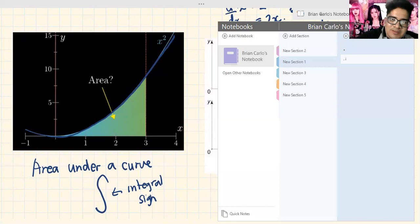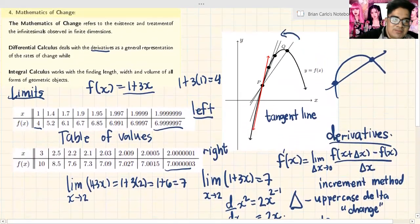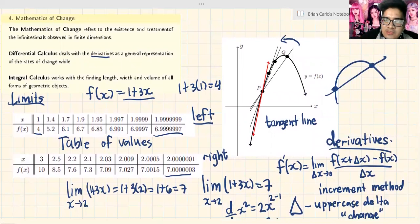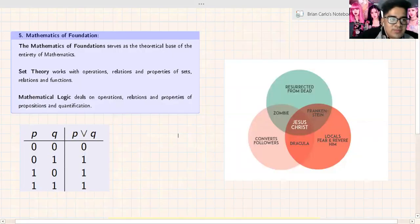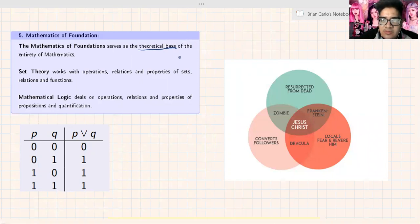I'm just giving you an overview of what these types of calculus are. We are just from differential calculus. There is another calculus type called integral calculus. Integral calculus works with finding length, width, and volume of all forms of geometric objects. Basically, what we're trying to say here is that you're finding the area. Now we move to mathematics of foundation. This is set theory.